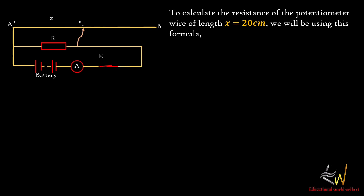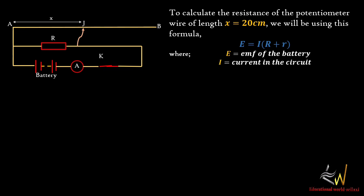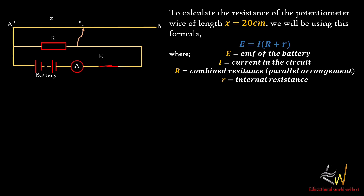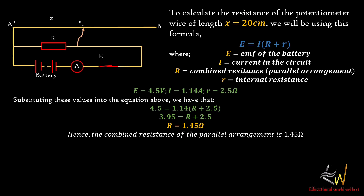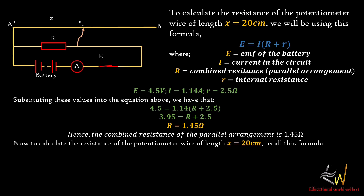To calculate the resistance of the potentiometer wire of length 20 cm, we use the formula: E equals current times open bracket R plus small r. Here, E is the EMF, I is the current in the circuit, R is the combined resistance from the parallel arrangement, and r is the internal resistance. So: E equals 4.5 volts, I equals 1.14 Ampere, and internal resistance equals 2.5 ohms. Putting these values into the equation: 4.5 equals 1.14 times open bracket R plus 2.5. Solving for total resistance gives R equal to 1.45 ohms — the combined parallel arrangement.